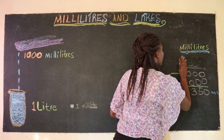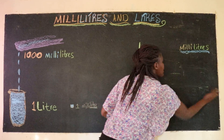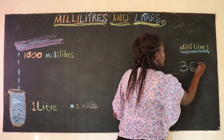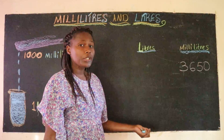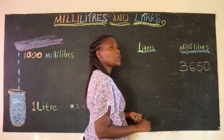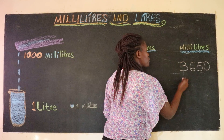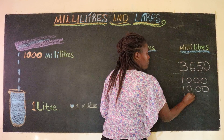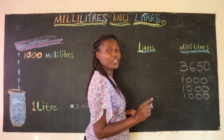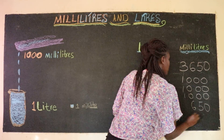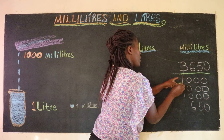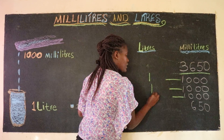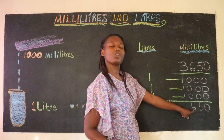Let's try another example. If we had three thousand six hundred and fifty milliliters, we would do the same thing — separate into thousands. That would be a thousand, plus another thousand, plus another thousand. And what is left? Six hundred and fifty. Each thousand becomes one liter, another thousand becomes one liter, another thousand becomes one liter. We leave the 650 because it is still not a thousand.